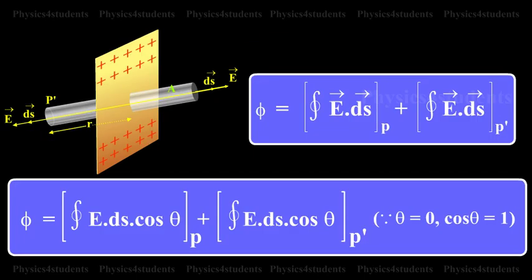Therefore, the total flux through the closed surface is given by phi equals integral over the closed surface of vector E dot vector ds.